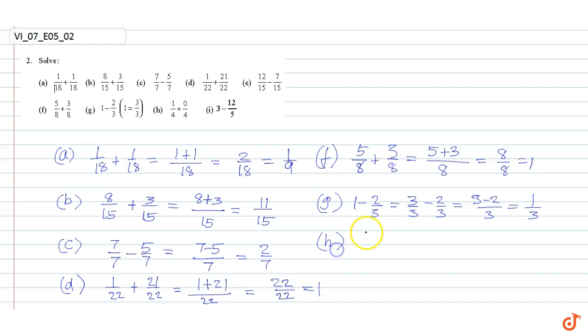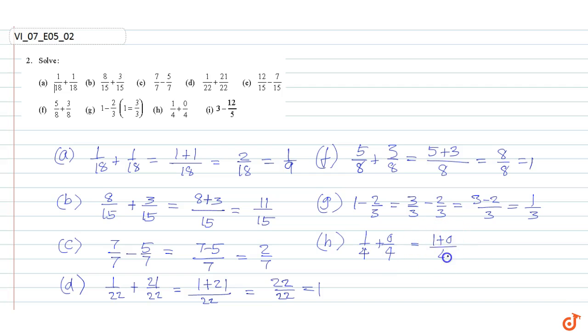Part h: 1/4 plus 0/4, which is equal to 1 plus 0 divided by 4, which is equal to 1/4.